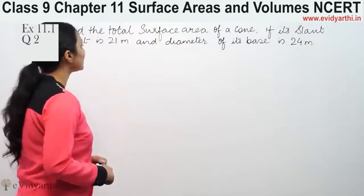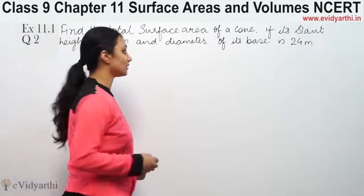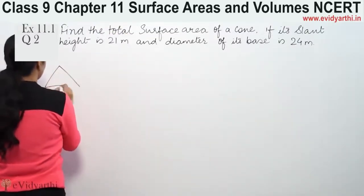This says find the total surface area of a cone if its slant height is 21 meters and diameter of its base is 24 meters. So we have a cone and we need to find the total surface area.